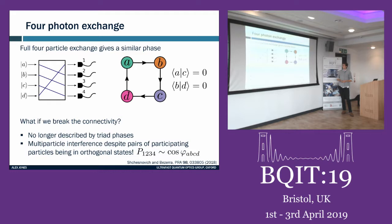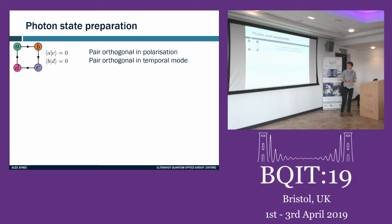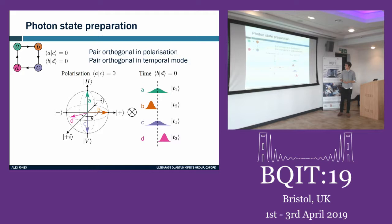To prepare photons with this kind of connectivity, we use two degrees of freedom: polarization and temporal mode. States a and c are orthogonal in polarization — a is horizontal and c is vertical — but in temporal mode they have the same broad wave packet. State b is in the diagonal polarization state so it overlaps with both a and c, and in temporal mode it's slightly walked off with a narrower wave packet.